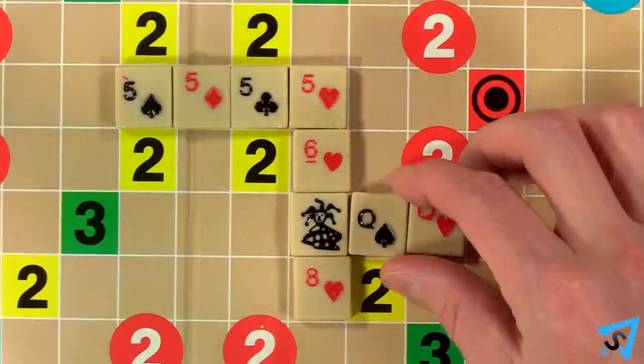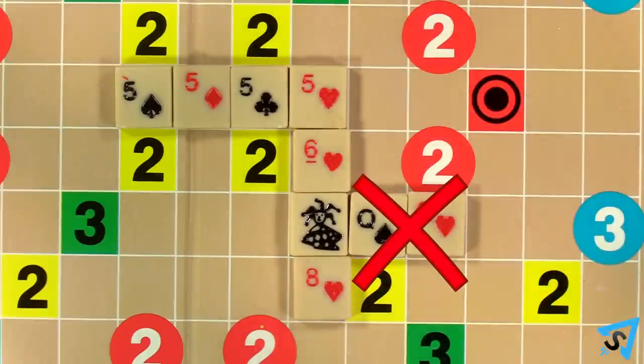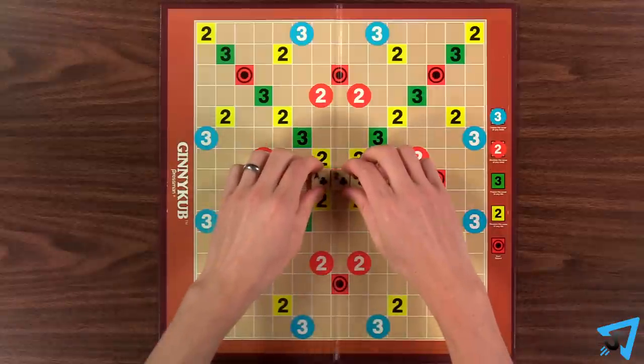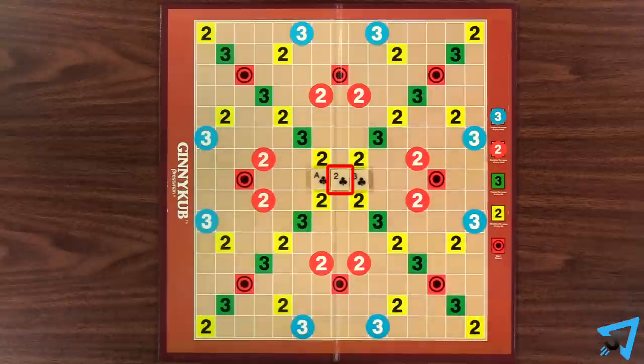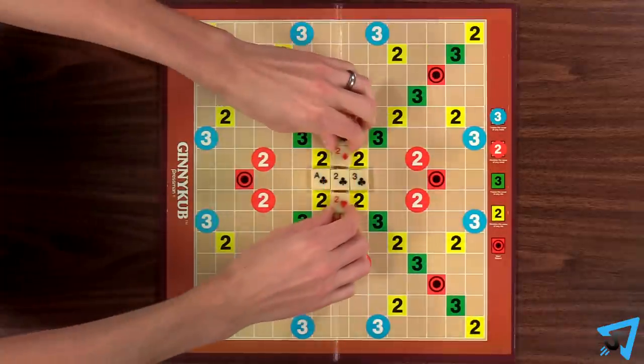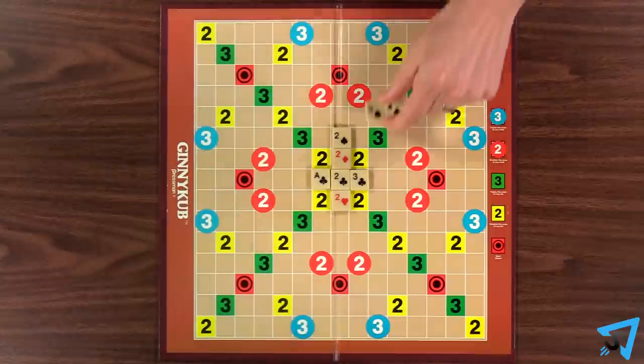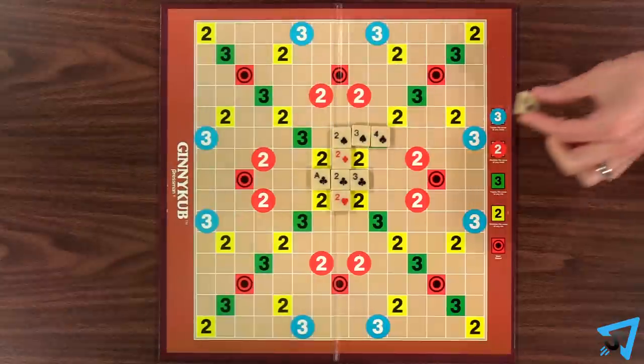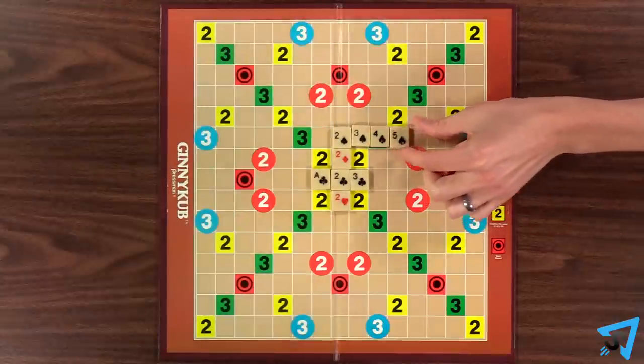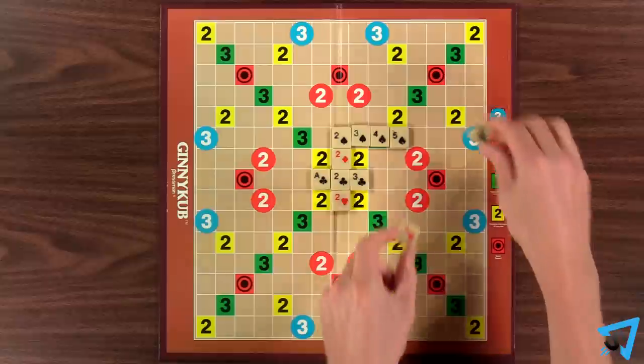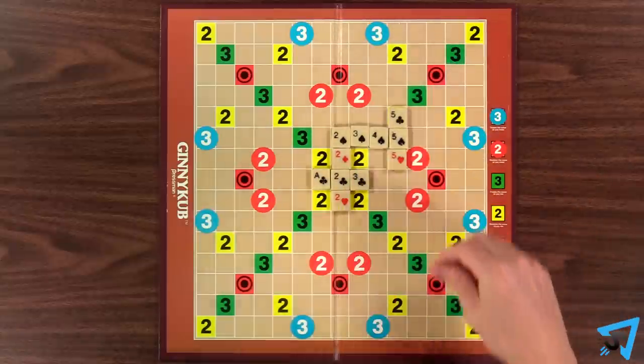Once played, the card they represent may not be changed. The first play of the game must be played to the center red start square. Once the first play is made, all subsequent plays must be made in crossword fashion by incorporating at least one tile of an existing meld or run into your play.